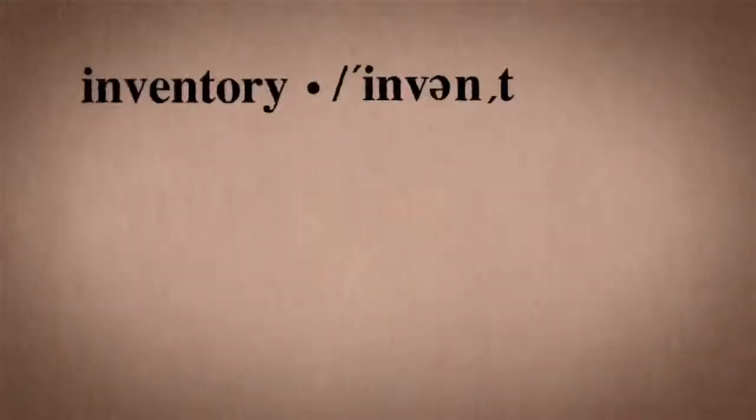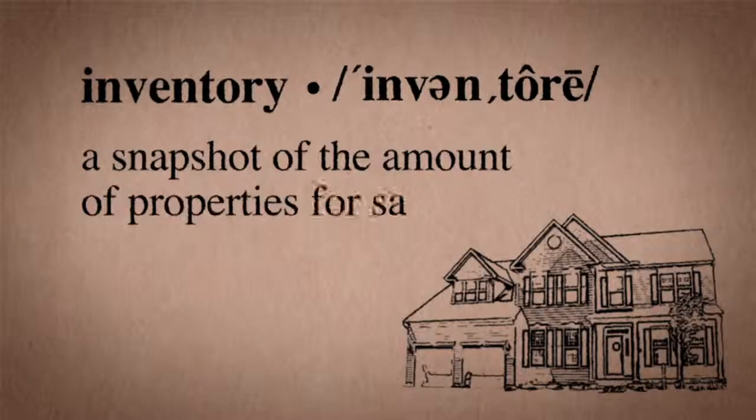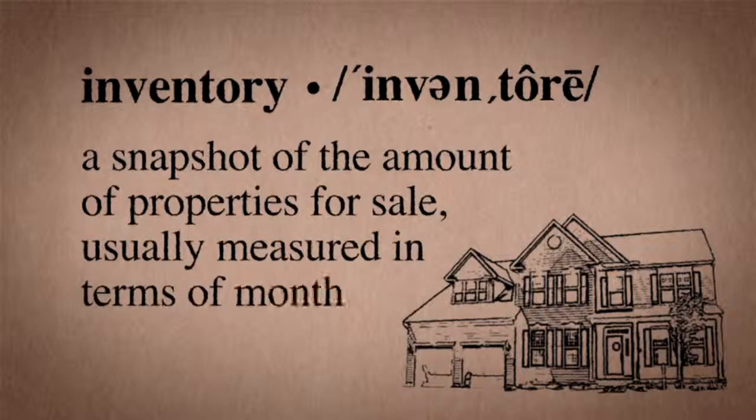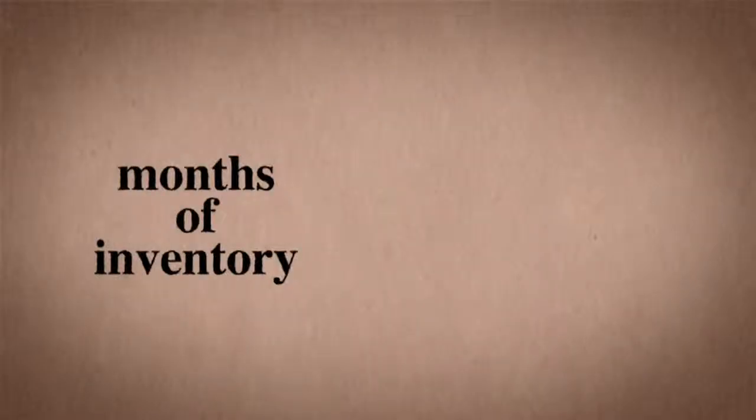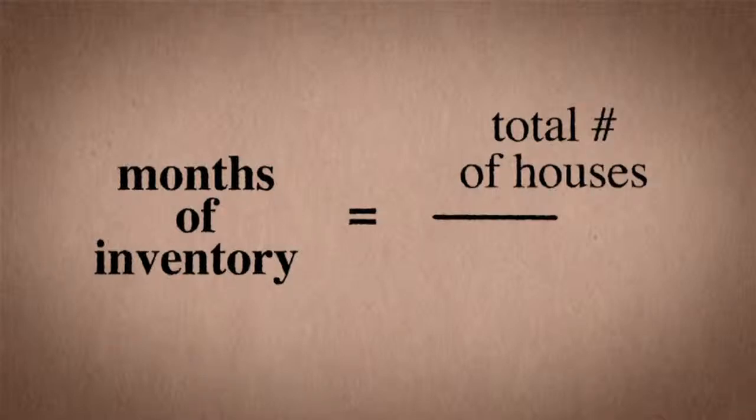Inventory is a snapshot of the amount of properties for sale usually measured in terms of months. The number of months of inventory is the total number of houses for sale divided by the current rate of sales.